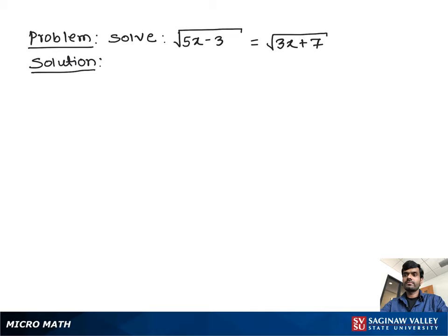Solve: square root of (5x minus 3) equals square root of (3x plus 7). Let's write the problem one more time: square root of (5x minus 3) equals square root of (3x plus 7).